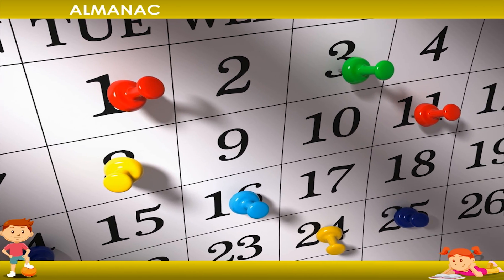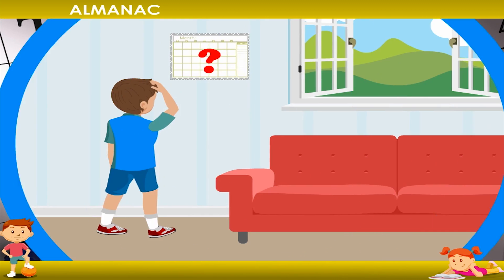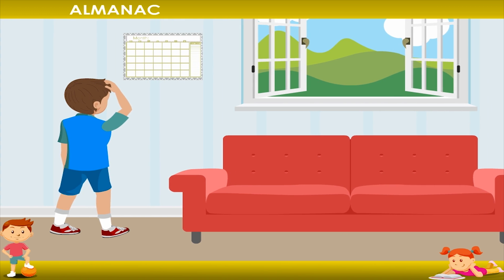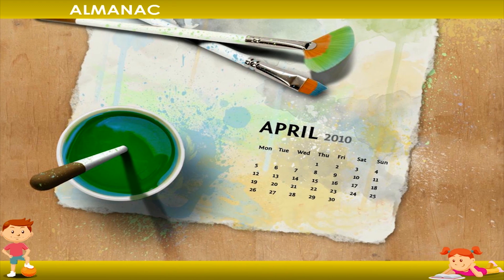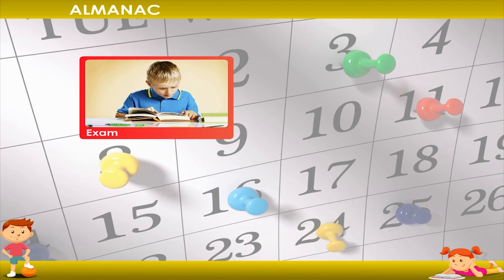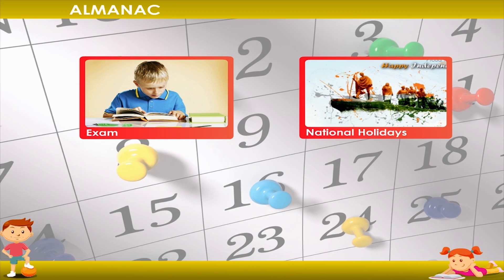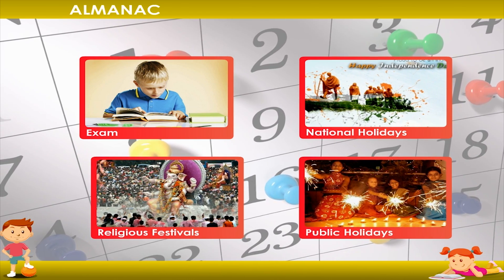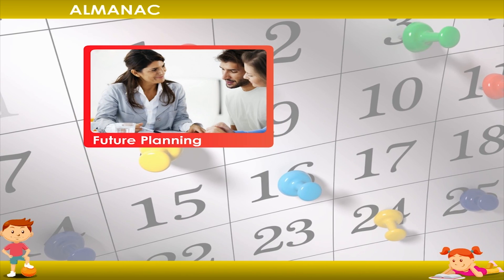We know the dates of a year with the help of a calendar. If there would be no calendar, it would not be possible to know the days of the month and the year. A calendar helps us to make plans. The exams and important events are marked by the calendar, such as national holidays, religious festivals, and public holidays. Calendars help us to make future plans and events.